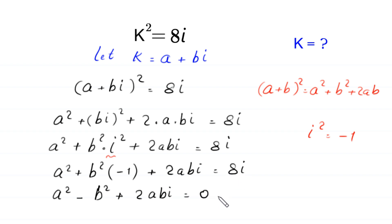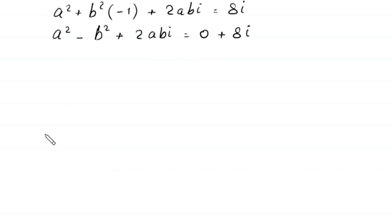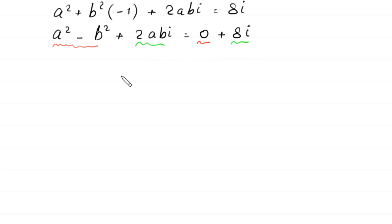We rewrite 8i as 0 plus 8i. Now we equate the real parts and imaginary parts separately: the real part gives a squared minus b squared equals 0, and the imaginary part gives 2abi equals 8i.